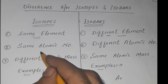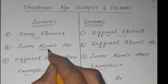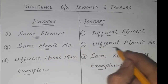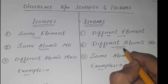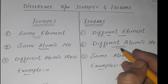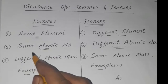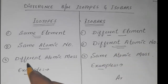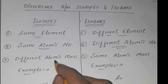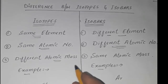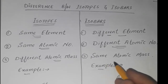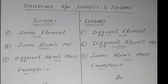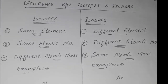Isotopes have the same atomic number — the same element, same atomic number. Isobars have a different atomic number. The real difference is: isotopes have different atomic mass but the same atomic number, while isobars have the same atomic mass but different atomic number.